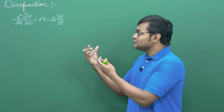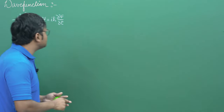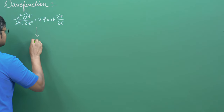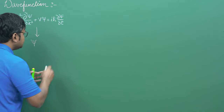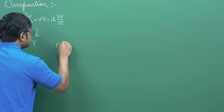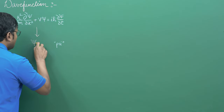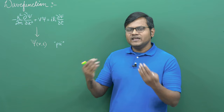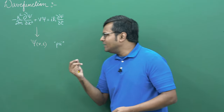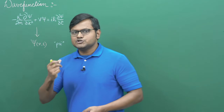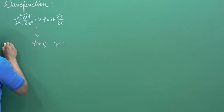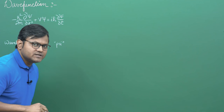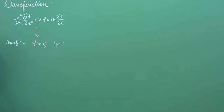If we want to study any kind of physical system, we have to solve this equation. What we end up getting is psi — a Greek symbol pronounced as 'psi' — which is a function of x and t. We've taken the Schrödinger's equation for a 1D case for simplicity. This solution is known as the wave function, and interestingly, it is a complex function.